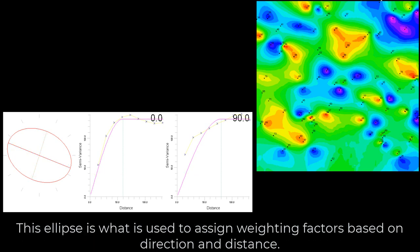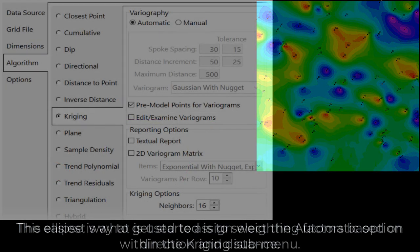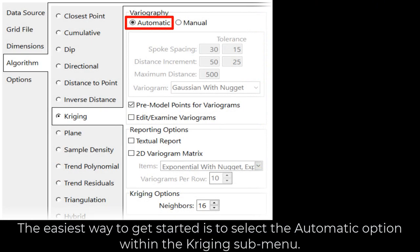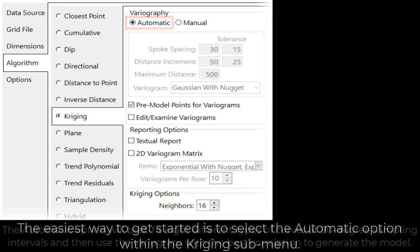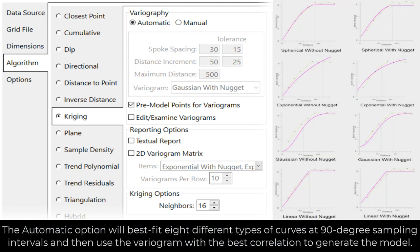This ellipse is what is used to assign weighting factors based on direction and distance. The easiest way to get started is to select the automatic option within the Kriging submenu. The automatic option will best fit eight different types of curves at 90-degree sampling intervals and then use the variogram with the best correlation to generate the model.